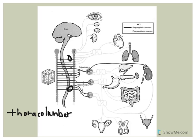The pre-ganglionic neurons - or rather the axons of them - are relatively short and they're lightly myelinated.